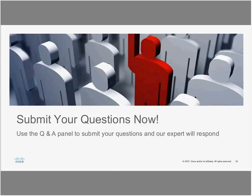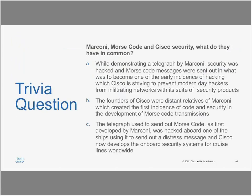That concludes the Q&A portion of today's event. You can ask more questions from this webcast on the Ask the Expert discussion. We have a trivia question: Marconi, Morse code, and Cisco security — what do they have in common? The answer is A: while demonstrating a telegraph by Marconi, security was hacked and Morse code messages were sent out in what was to become one of the early incidents of hacking — which is what Cisco is striving to prevent modern-day hackers from doing with its suite of security products.